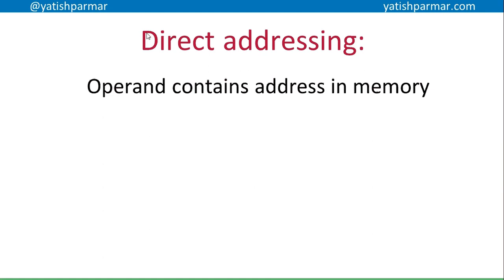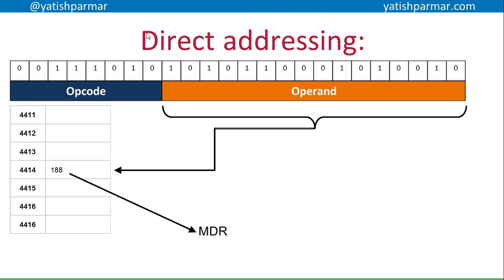An alternative is to use direct addressing, where the operand actually contains the address in memory. Pretty much all of the examples I've been talking about in previous videos have been using direct addressing. In this case, the operand contains — if you turn that into decimal — the value 4414. So that operand points at that memory location, and that data item, which is 188, is then loaded into the memory data register in order to be operated upon. The limitation is that you're limited by the number of bits in your operand, and therefore limited in the physical amount of memory you can actually address.